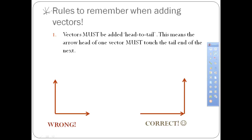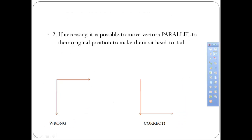A couple of rules to remember when adding vectors together. The first is that they have to be added head to tail — the arrowhead of one has to be touching the tail of the other. Adding vectors with both tails together is wrong; it tells the observer you went two different directions at the same time, which is not possible. If your vectors are not oriented head to tail, it is possible to move them parallel to their original position so that they sit head to tail correctly.